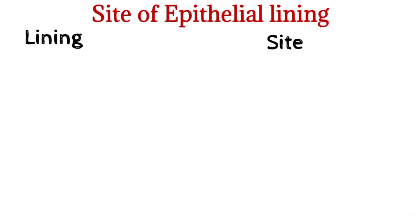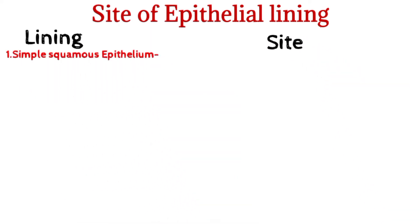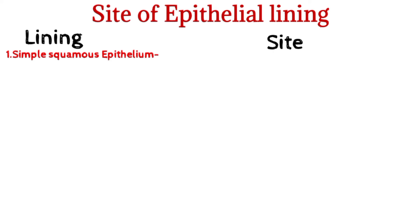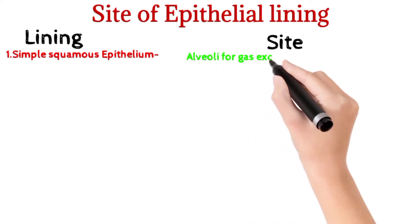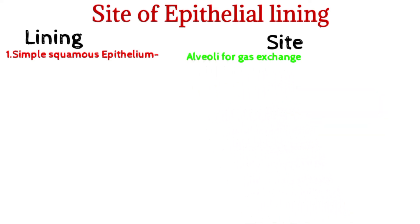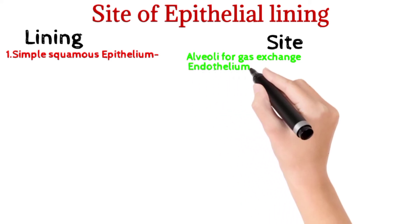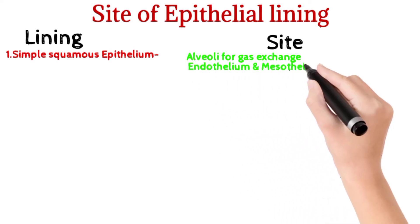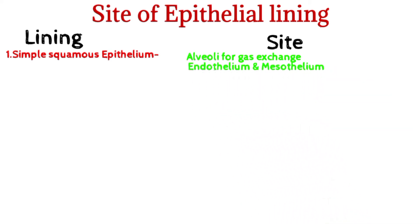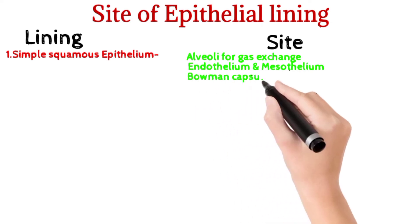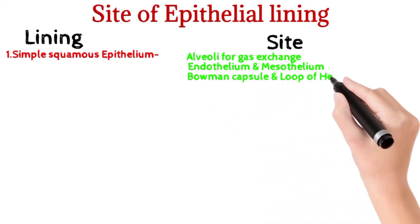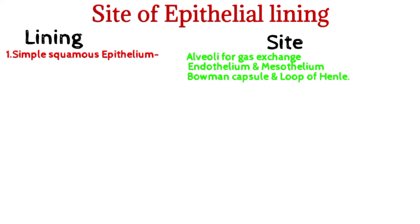Simple squamous epithelium is present in alveoli for gaseous exchange in the lung. It is also present in endothelium and mesothelium, as well as in Bowman's capsule and the loop of Henle for filtration. Its functions are fluid transport, gaseous exchange, and filtration.